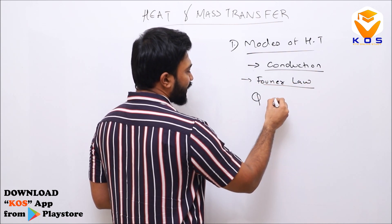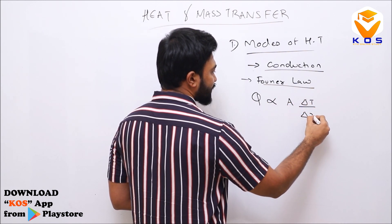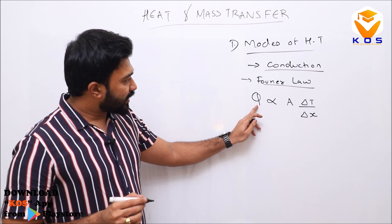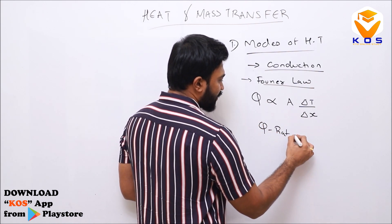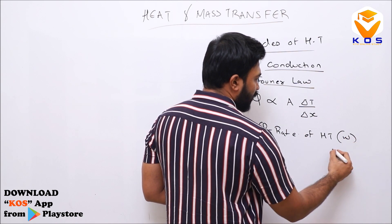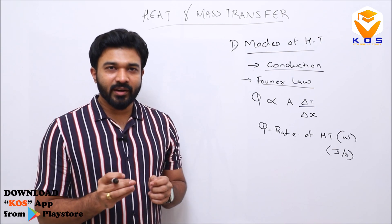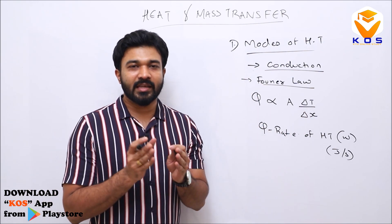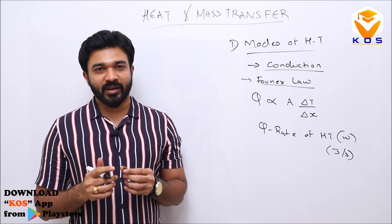Fourier's Law states: q is directly proportional to A times ΔT/Δx. This equation we need to know. Here, q is the rate of heat transfer, with unit watts. One watt is also equal to one joule per second. There is also a basic relation between temperature and heat.